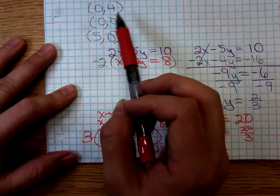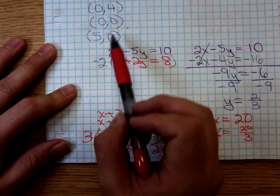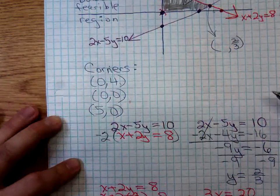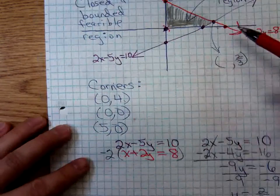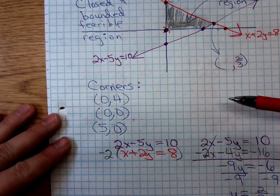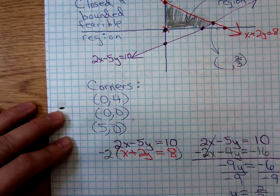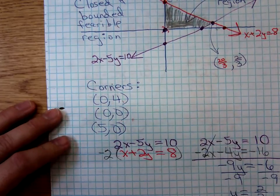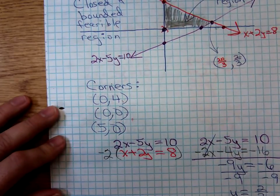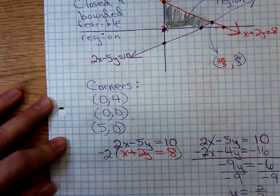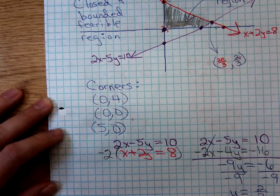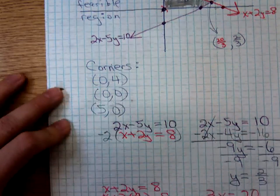So the three corner points 0, 4 and 0, 0 and 5, 0 we were able to identify just by looking at the graph. But the fourth corner point, which we couldn't just read off, we used elimination and it turned out to be 20/3, 2/3. You're going to have to find those corner points as we go through this process, and the method I prefer is elimination.